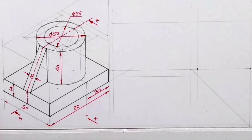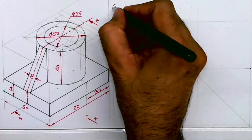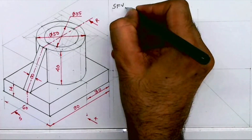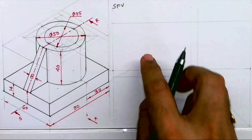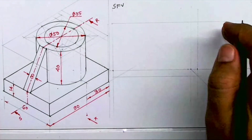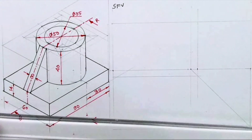Welcome to technical drawing. Today we'll see how to draw the sectional front view of the SAM. They have given you sectional front view along SR. We have to draw front view, top view, and left side view. And then we'll draw the sectional view.